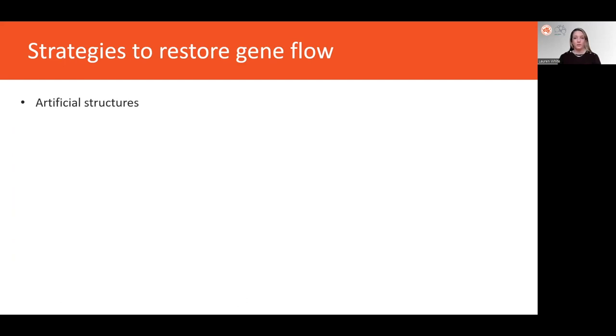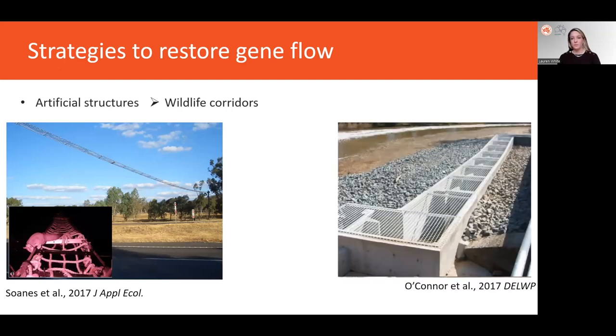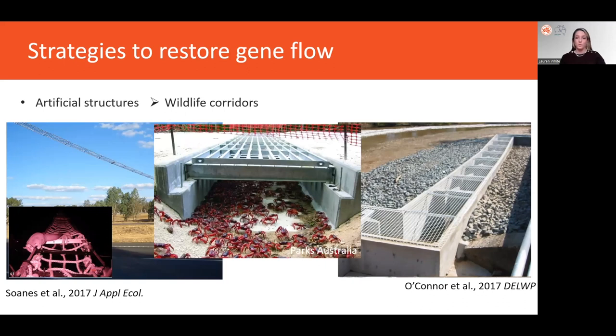Another method of restoring gene flow is through constructing artificial structures like wildlife corridors. These are linear pathways that connect fragmented areas and facilitate animal movement. Some examples of wildlife corridors in Australia are the glider poles and bridges erected over the Hume Highway, fish waves, which are structures built around dams or other obstacles that allow fish to disperse around these artificial barriers, and tunnels built over roads for the annual red crab migration on Christmas Island.